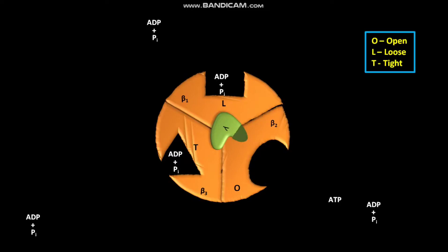Now the gamma subunit does not rotate, but the ADP and PI in the T site, or tight site, of beta3 subunit form ATP spontaneously. This ATP formation from ADP and PI does not require an input of additional energy, because the active site of the T state of beta3 subunit has a special environment. At the same time, a new ADP and PI bind loosely to the unoccupied O site, or open site, on the beta2 subunit.